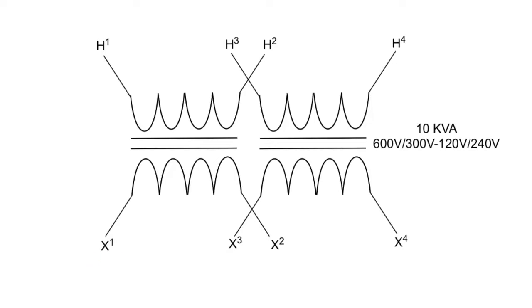Down here, X1, X2, X3, X4. Those are my lower voltage windings.